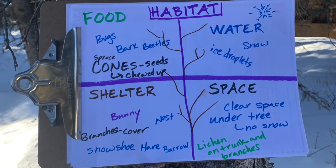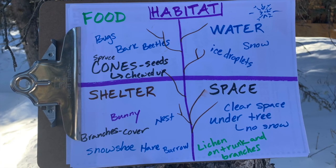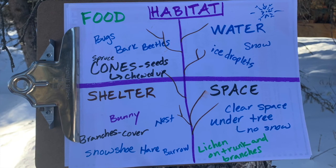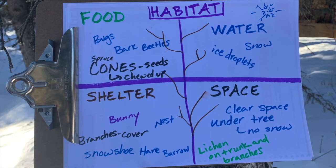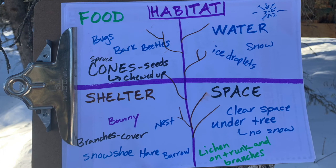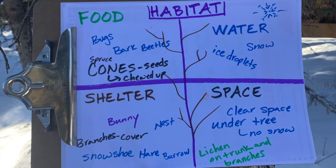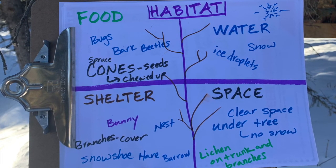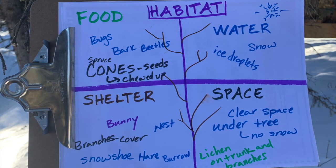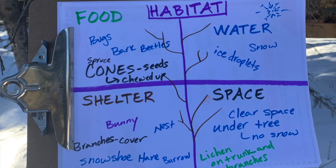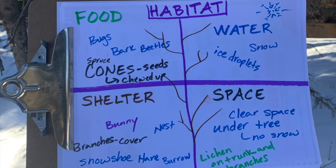Inventory the plants and animals they noticed that used trees as habitat. Allow time for sharing and discussion. What plants, animals, or animal signs did we find on the tree's trunk? What did we observe on the branches? Where else did we notice signs of habitat? What types of evidence did we observe that let us know that these trees are habitat for another organism?